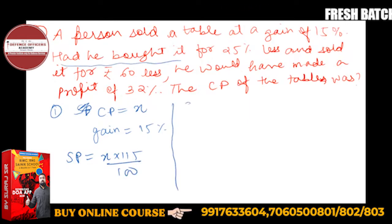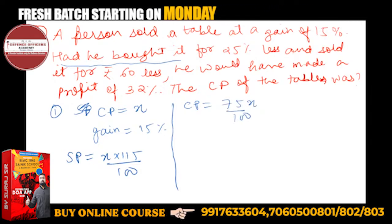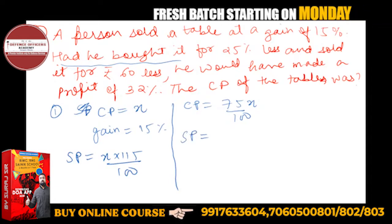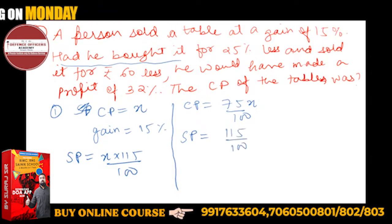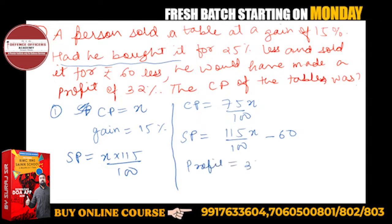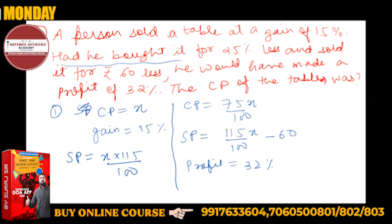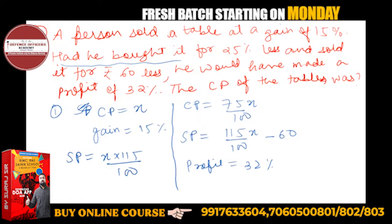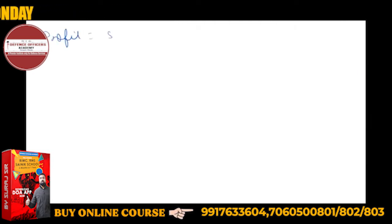In the second condition, if he bought it 25% less, the CP is 75 upon 100 into x, which is 75x upon 100. And if he sold it for Rs. 60 less, he would have made a profit of 32%. Profit percent equals profit upon CP into 100. Profit will be SP minus CP.